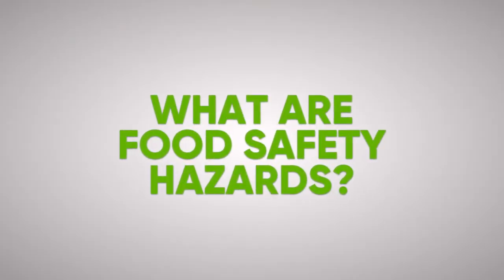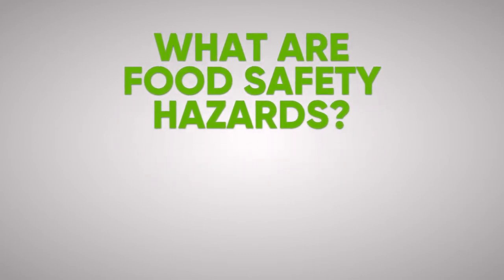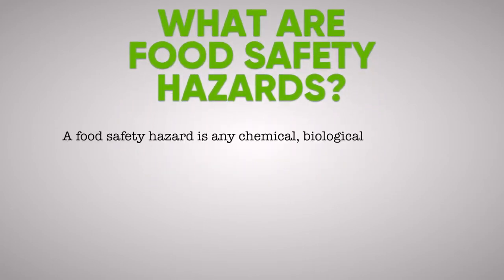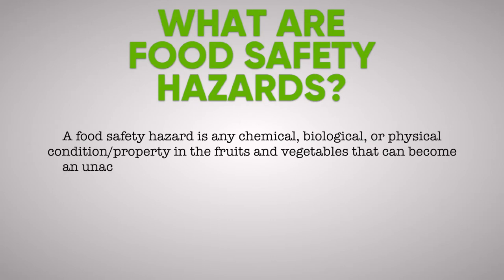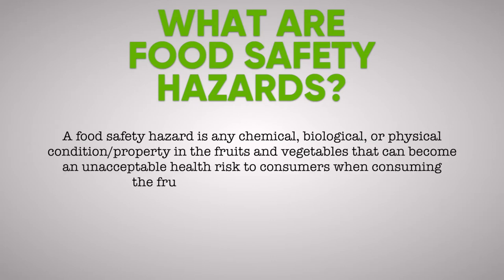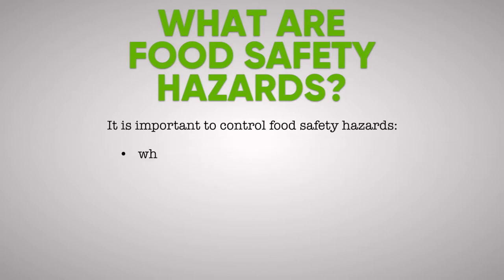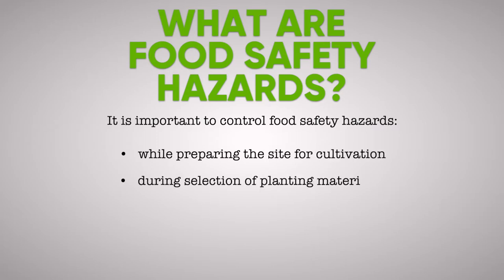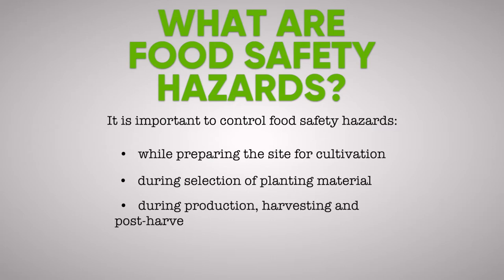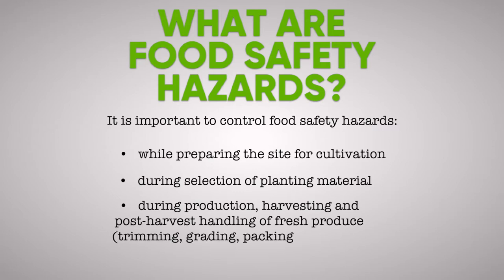What are Food Safety Hazards? A food safety hazard is any chemical, biological, or physical condition in fruits and vegetables that may cause illness or injury to the consumer. It is important to control food safety hazards while preparing the site for cultivation, during selection of planting material, and during production, harvesting, and post-harvest handling of fresh produce — for example, trimming, washing, grading, packing, transport, and storage.